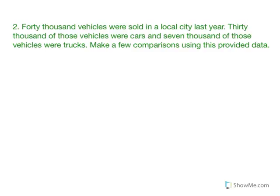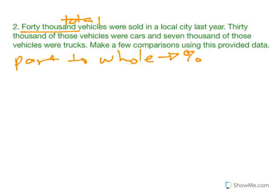40,000 vehicles were sold in a local city last year. That's a total number. 30,000 of those were cars, 7,000 were trucks, and 3,000 were other. Make a few comparisons. If we go part to whole, we can talk about in terms of percents. There are 30,000 cars to 40,000 total vehicles.